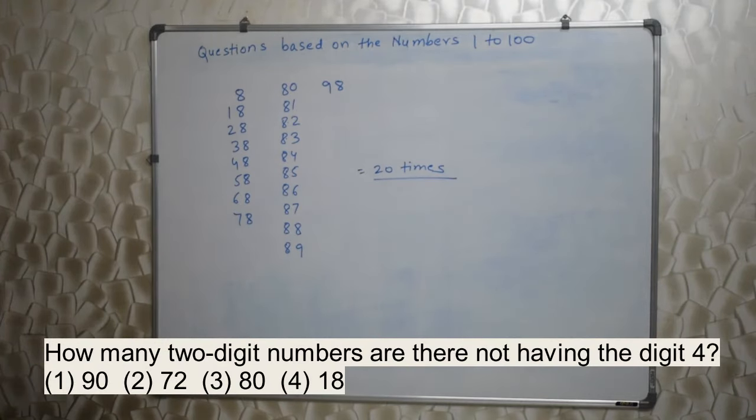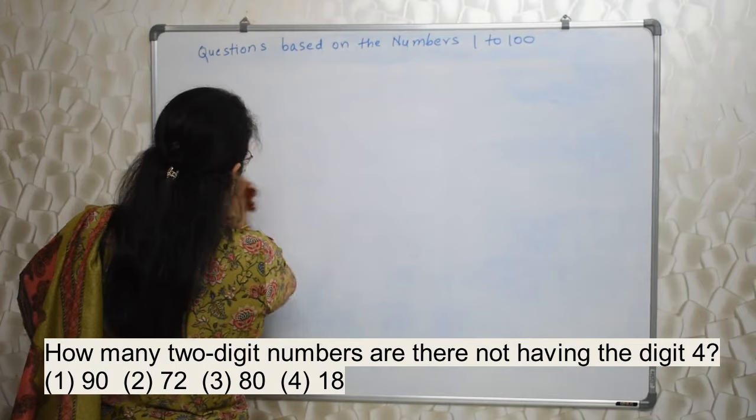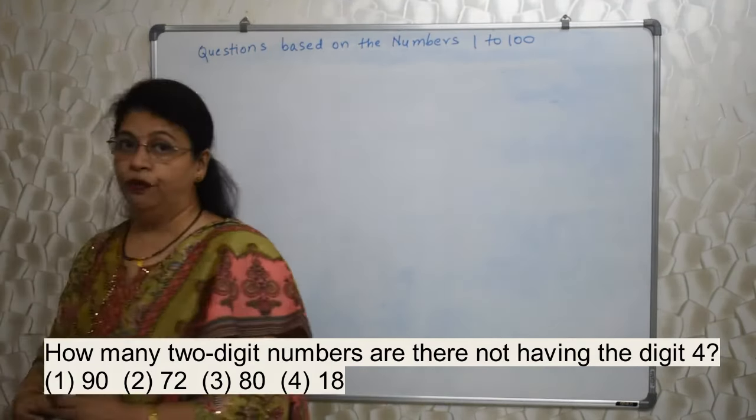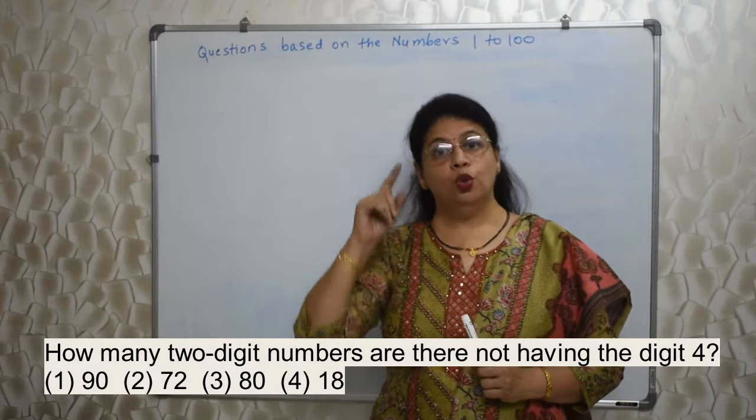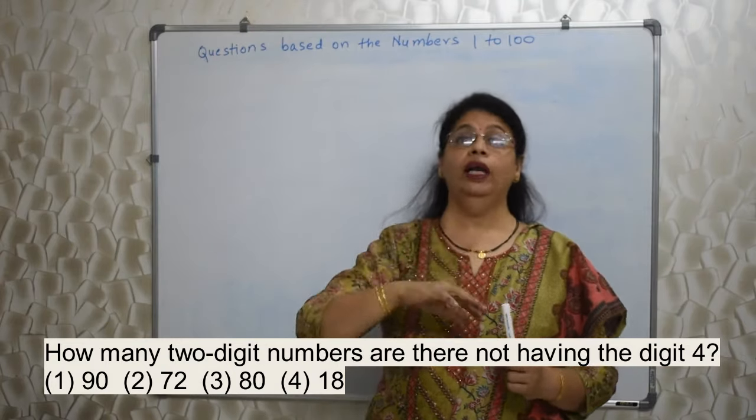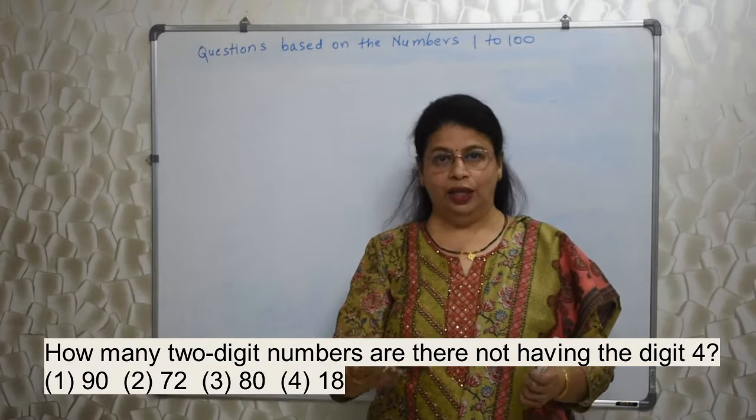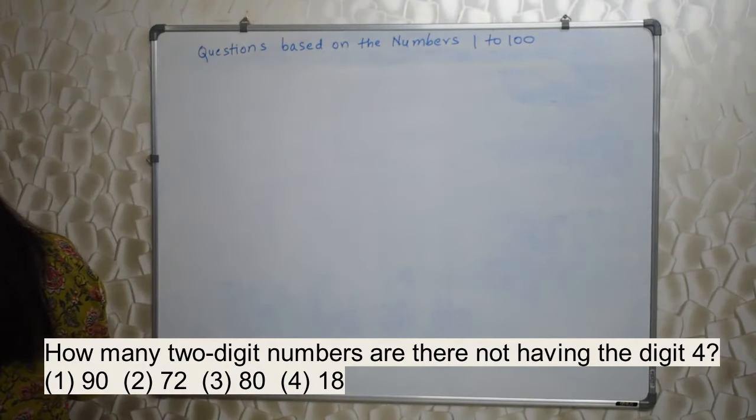Next sum: How many 2-digit numbers are there not having the digit 4? Very important sum. What are they asking? Not having digit 4 will be many, many numbers. It's not literally possible for us to write all those numbers. So whenever they ask you not having 4, not having 3, write having 4. Those having 4 are few. Write them.